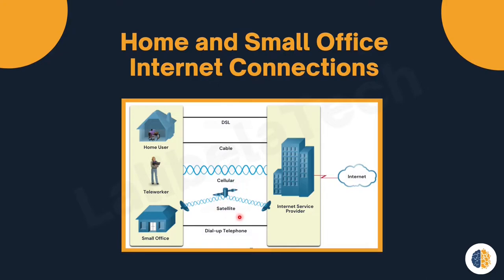The fourth one is satellite connection. The availability of satellite internet access is a benefit in those areas that don't have internet connectivity at all. A satellite dish requires a clear line of sight to the satellite and can be affected by trees and other obstructions.